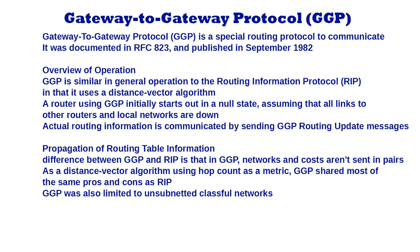As a distance vector algorithm using hop count as a metric, GGP shared most of the same pros and cons as RIP. It had simplicity on its side but had various problems such as slow convergence and the counting-to-infinity problem. GGP was a much more rudimentary protocol than RIP and did not include many of the features included in RIP to handle such issues, such as split horizon. GGP was also limited to unsubneted classful networks due to its age.